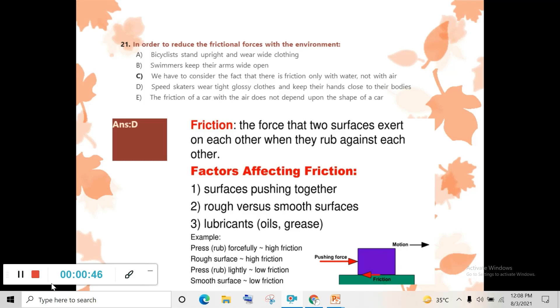Question 21: In order to reduce the frictional forces with the environment. Whenever we use the word reduce, you must use oiling. Oiling is the method by which you can reduce friction. What is friction? Friction is a force that two surfaces exert on each other when they rub against each other.